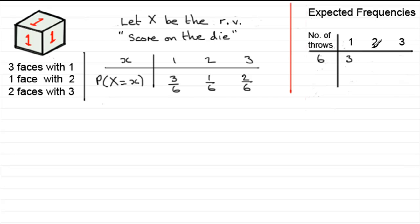Similarly, to score a 2, there's one face in every 6 that gives us a 2. So 1 in 6 times, we would expect a 2. So it's got to be 1 there. And for the 3, it's going to be 2.